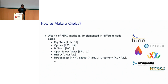Given that hyperparameter optimization is so important, how do practitioners make a choice between different methods in order to figure out what fits their problem best? This choice is difficult because there's a wealth of HPO methods out there and new ones are invented all the time, implemented in different code bases. Just listing a few: Raytune, Optuna, Botorch, OpenSource SMAC, Hebo, HP Bandster, Dragonfly — and the list could go on.